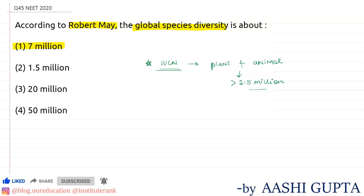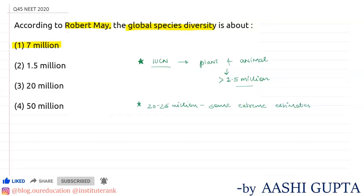And some extreme estimates — not the IUCN data — but some extreme estimates suggest the total species diversity ranges from 20 to 25 million. So to summarize: Robert May estimated global species diversity at about 7 million, IUCN's described plant and animal species total 1.5 million, and some extreme estimates put the figure at 20 to 25 million.